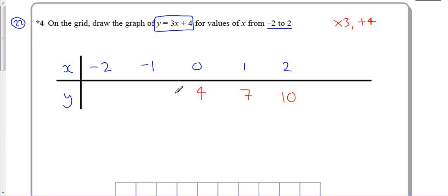And you probably spot a pattern of what's going on here, but let's just check. 3 lots of -1 is -3, add 4 is 1. We've got a nice little pattern going on here. Now we need to get these numbers onto our grid.